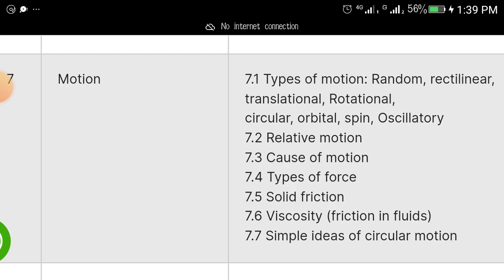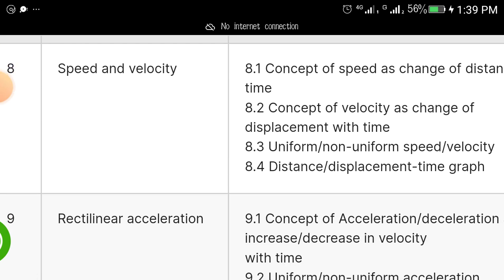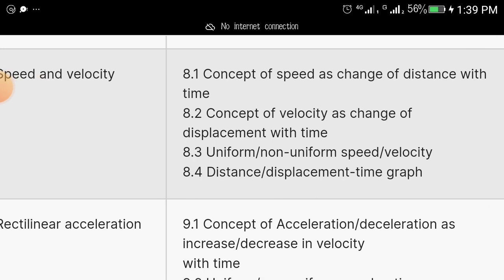Under motion we have types of motion like random motion, rectilinear motion, translational motion, rotational motion, circular motion, orbital motion, spin, oscillatory. Then we have relative motion, causes of motion, types of motion, solid friction, viscosity - that's viscosity is friction in fluids - then simple ideas of circular motion.